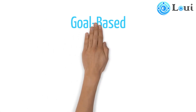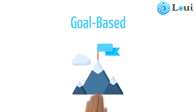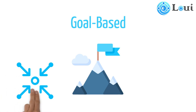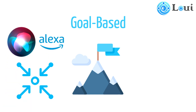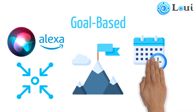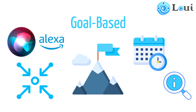Third, there are goal-based agents. These agents make decisions to achieve a goal and are designed to perform specific tasks or achieve specific objectives. For example, Siri and Alexa are goal-based agents that use natural language processing and machine learning to understand user requests and perform tasks such as scheduling appointments or finding information.